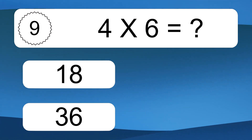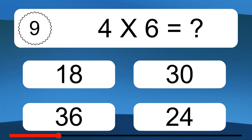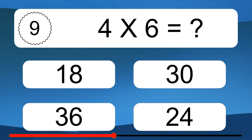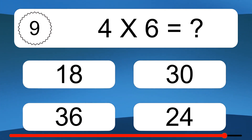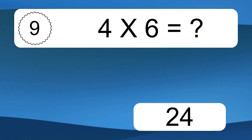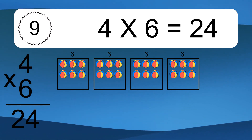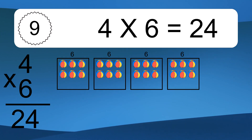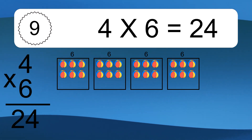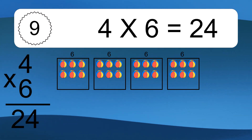4 times 6 equals what? 4 times 6 equals 24. We have 4 boxes, and each box has 6 colorful balls inside. If you count all the balls in all the boxes together, you will have 4 times 6 balls. This equals 24 balls.